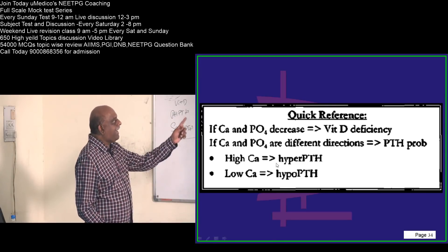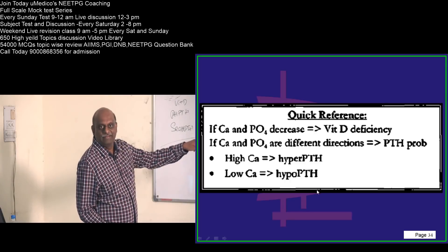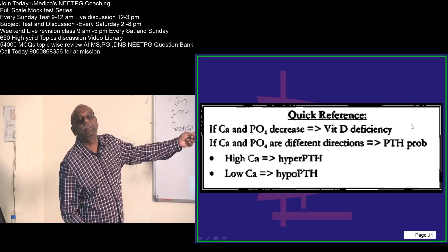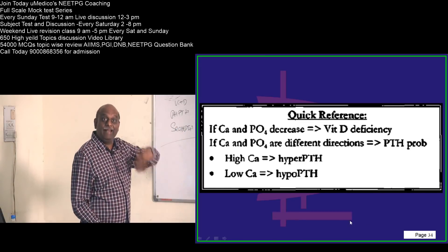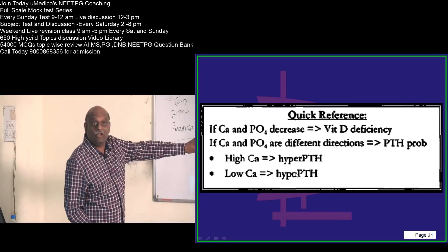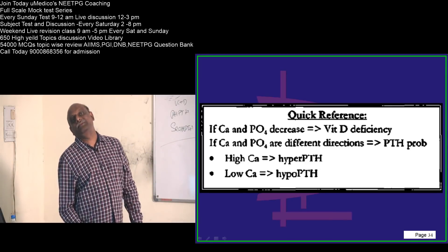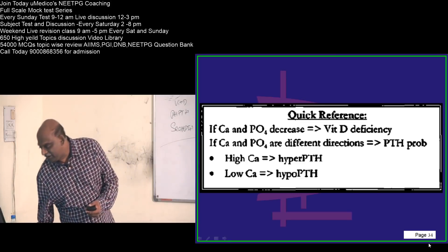If you have high calcium and low phosphate, then you have primary hyperparathyroidism. If you have low calcium and high phosphate, you will think of primary hypoparathyroidism. That's what you have to ultimately remember.